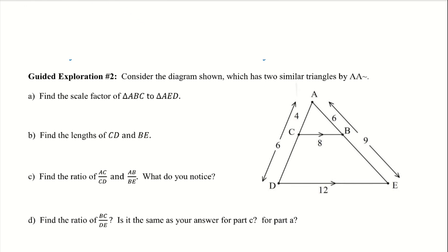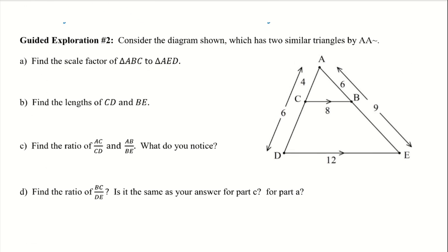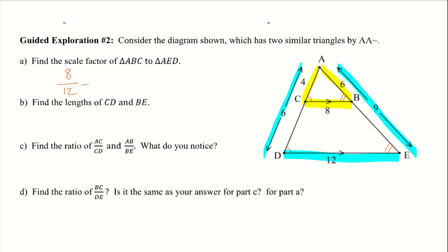Let's go ahead and do the second guided exploration. We have two similar triangles by angle-angle similarity — we already talked about how the angles are congruent because they are corresponding angles with those parallel lines. Let's find the scale factor of ABC to AED. We have a couple of options: 4 over 6, or 6 over 9, or 8 over 12 — any of these would work as they are all corresponding parts and should all give the same proportion. Let's do 8 over 12, which simplifies to 2 over 3. So the scale factor of ABC to AED is 2 over 3.